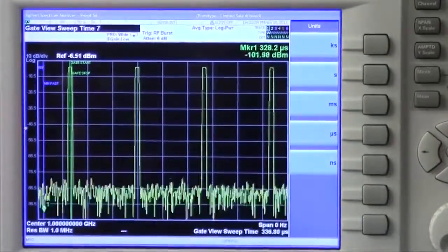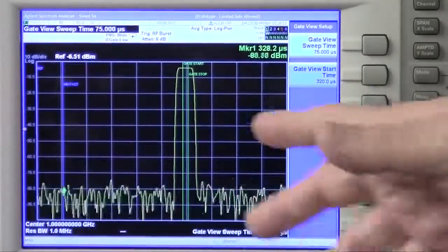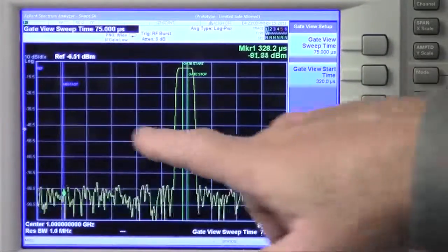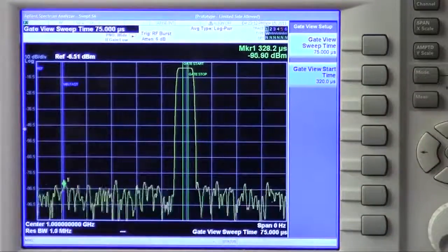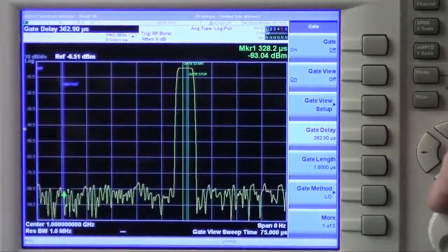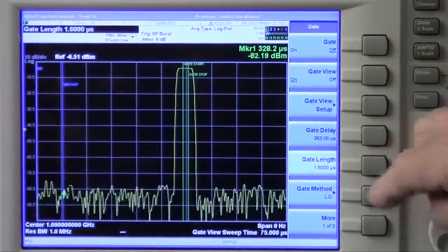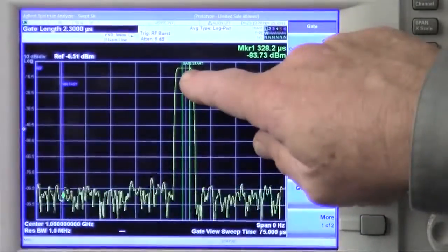now I can make the gate view sweep time smaller and smaller. In fact, let's move it down to about 75 microseconds. And now you can see, here's the min fast line, here's the first pulse after min fast. And again, I'm not going to have any trouble setting the gate delay and the gate length so that they're nicely on the pulse.